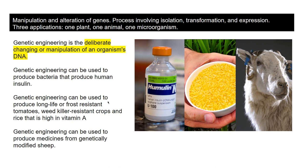The three applications: genetic engineering can be used to produce bacteria to produce human insulin. It can be used to produce long-life or frost-resisting tomatoes, weed-killer resistant crops, or rice that is high in vitamin A. There is also a sheep that has been genetically modified to produce a medicine to help treat people with a lung disease. Using farm animals like that to produce medicines is known as pharming - spelled P-H-A-R-M-I-N-G.